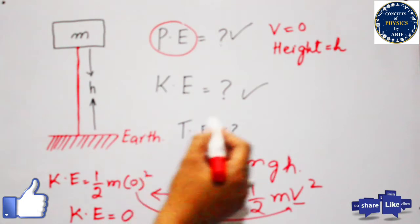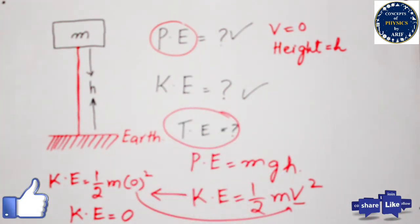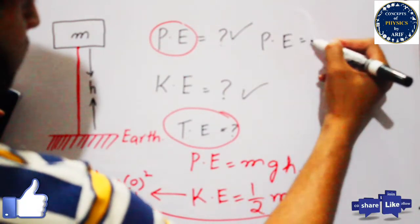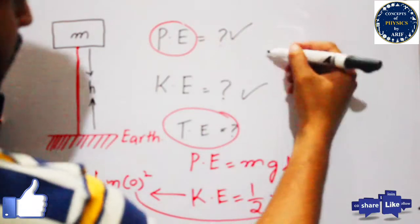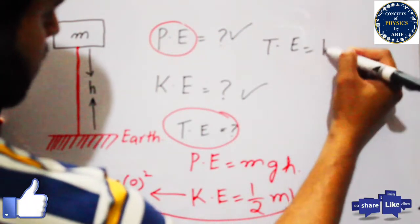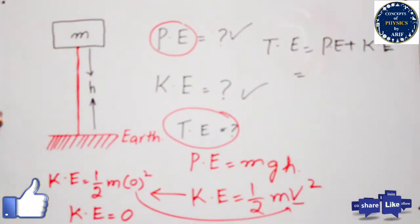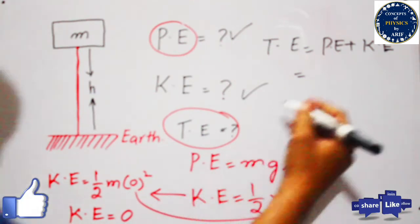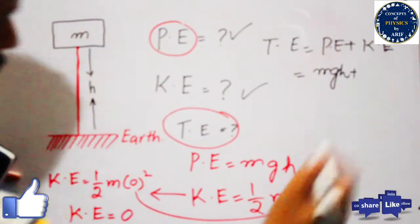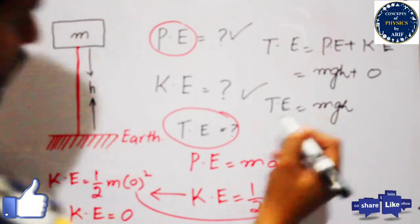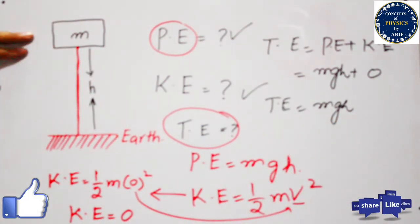We need to calculate the total energy at this point. The total energy is the sum of potential energy and kinetic energy. So total energy equals mgh plus zero, which gives total energy equal to mgh. This is the first case where we have calculated the total energy when the body is at rest at some height.